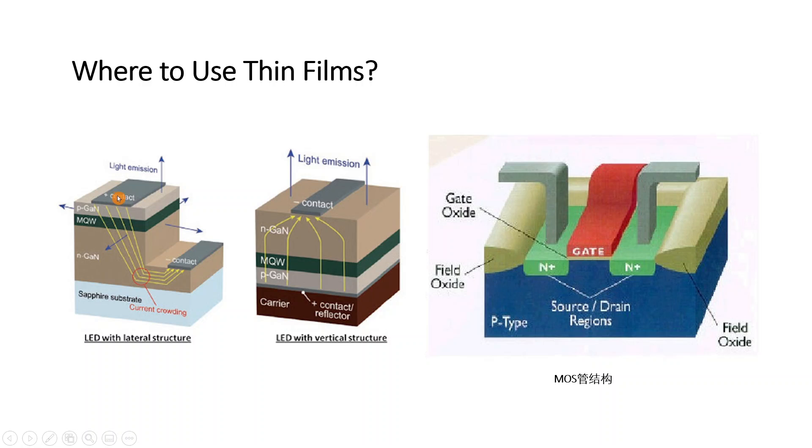In this structure, you have an electrode, that's thin film, P-type gallium nitride, that's thin film, multiple quantum well, MQW, that's also thin film, many layers of thin film inside.